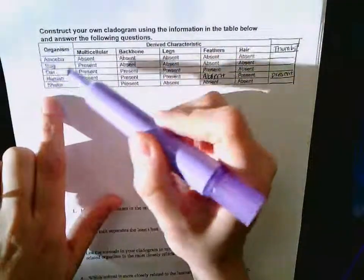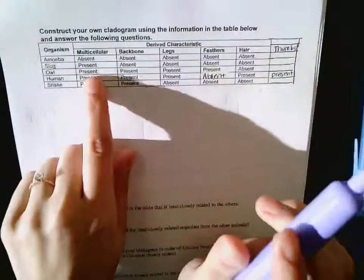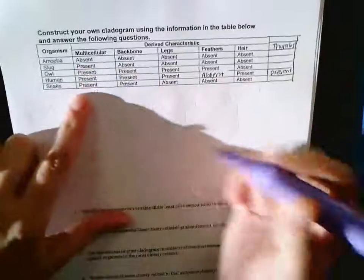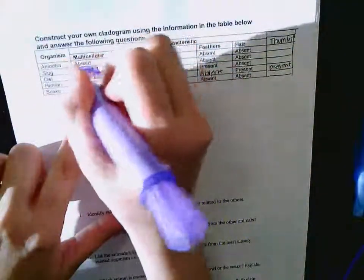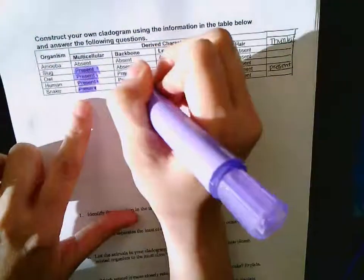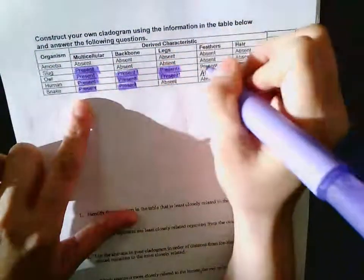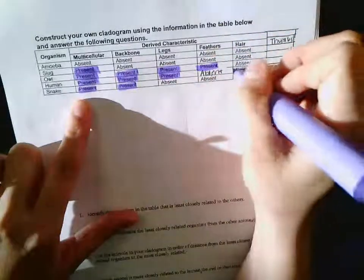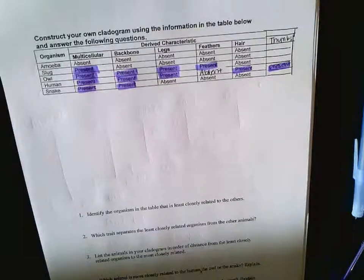I want you to look at the derived characteristics. All that means is what characteristics could be present. Present means they have them, absent means they do not have them. So what I'm going to do is you can either star or highlight the ones that say present. Go ahead and highlight or star the ones that say present. That helps you break it down.